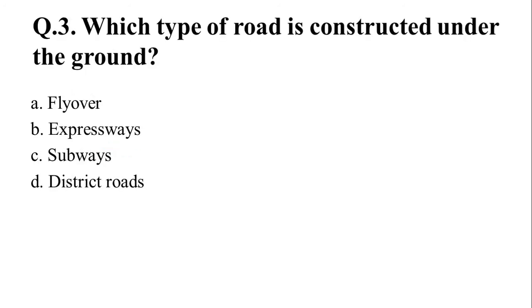Question 3: Which type of road is constructed under the ground? Options: A. Flyover, B. Expressways, C. Subways, D. District Road. The right answer is option C — Subways.